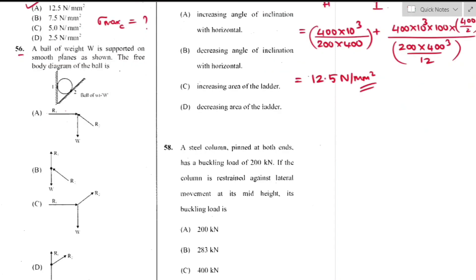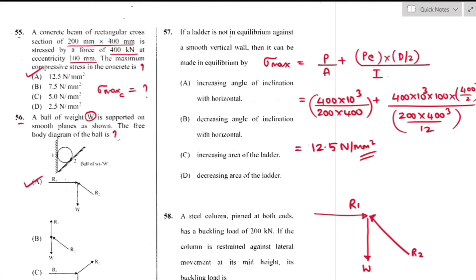Question number 56: A ball of weight W supported on smooth planes — the reactions are perpendicular to the planes. The free body diagram shows reactions normal to the surfaces — option A is the right answer.